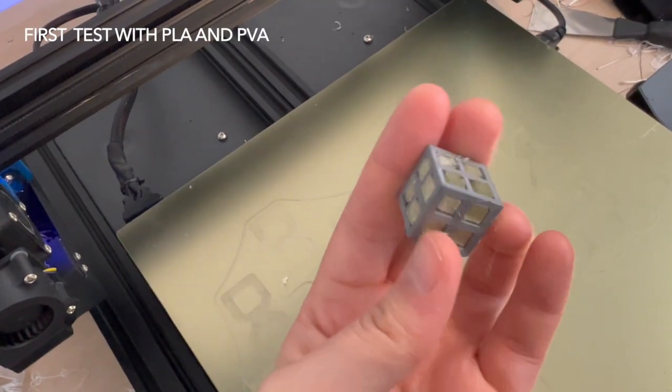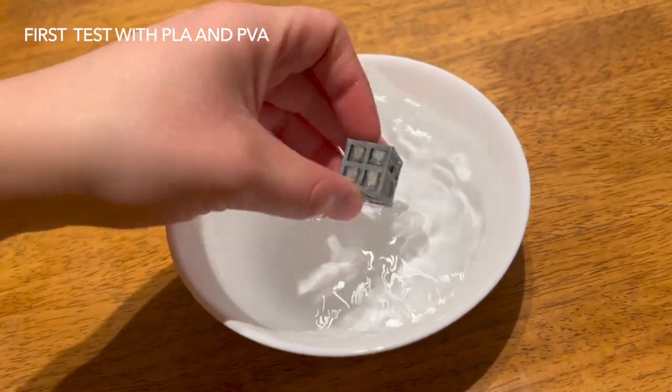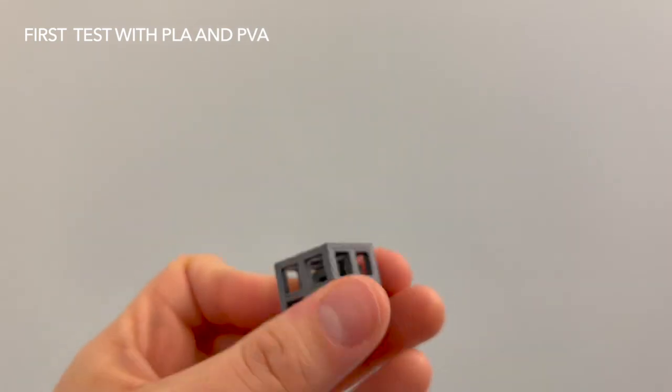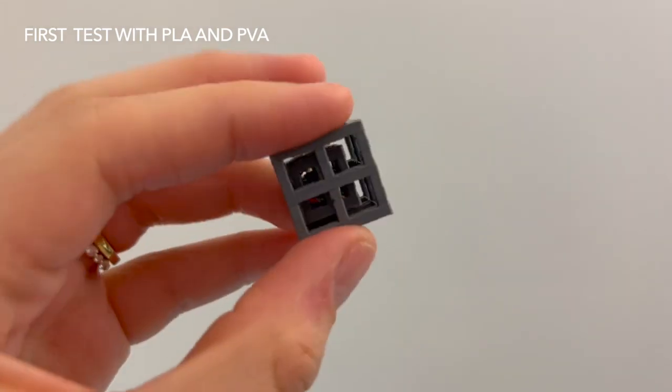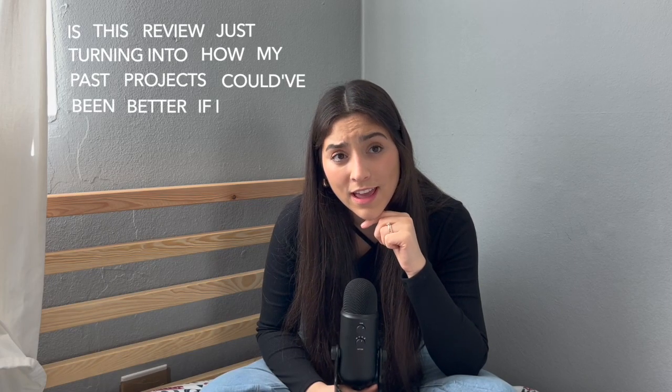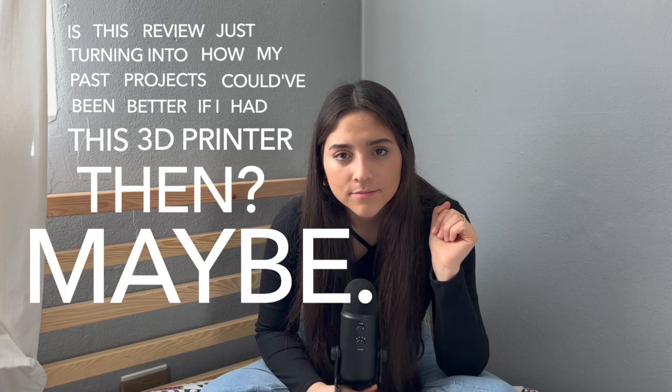Now, one of the aspects that got me really excited about dual mode is the fact that you can print with dual materials, like PVA, aka dissolvable supports. I'd never printed with PVA filament before, but I have desperately needed it in the past. Is this review just turning into how my past projects could have been better if I had this 3D printer then? Maybe.